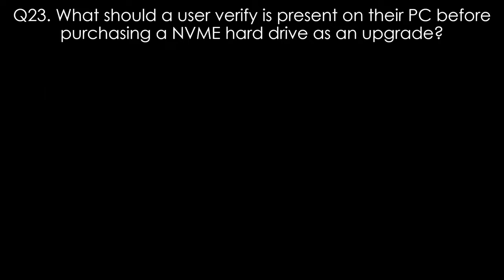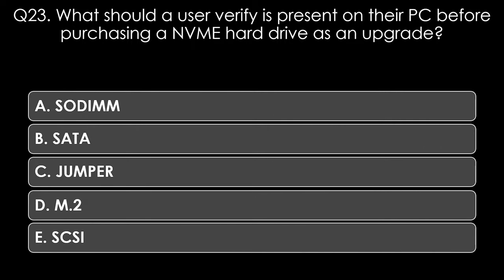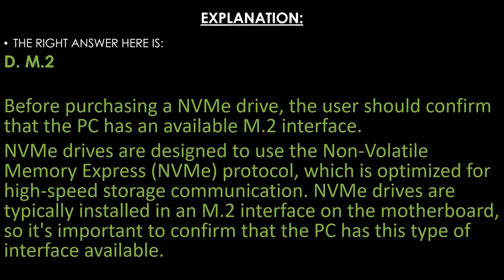Question twenty-three. What should a user verify is present on their PC before purchasing an NVMe hard drive as an upgrade? Options: SODIMM, SATA, jumper, M.2, or SCSI. The right answer is M.2. Before purchasing an NVMe drive, the user should confirm that the PC has an available M.2 interface. NVMe drives use the Non-Volatile Memory Express protocol optimized for high-speed storage communication and are typically installed in an M.2 slot on the motherboard.